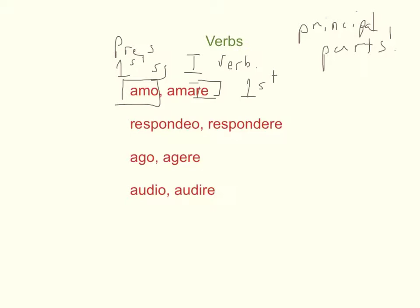Similarly down below, you have respondeo, respondere, that should be a macron there, long E. This is second conjugation. So again, you get first person singular present and you get the infinitive. Ago agere, short E, so it's third. In other words, A-G short E R-E, that's the infinitive. So instead of respondeo, it's pronounced agere. Agere, no agra here, it's agere. And you get the first person singular.